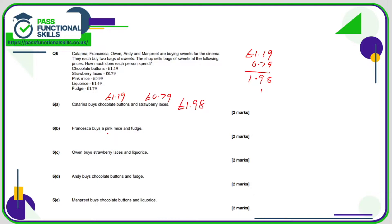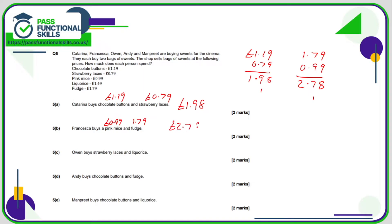Francesca buys pink mice at 99p and fudge at £1.79. Using column method: 179 and 0.99. What I'd do here is treat 99p as one pence less than a pound — add a full pound to make 279, then subtract that penny, giving £2.78. Alternatively: 9 plus 9 is 18, carry one; 9 plus 1 plus 7 is 17, carry one — you still get £2.78.